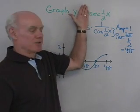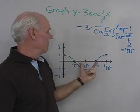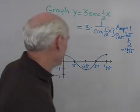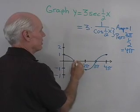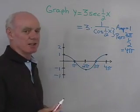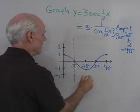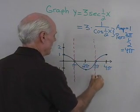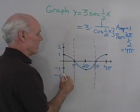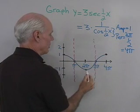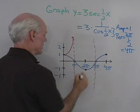Now let's see what the graph of sec(½x) looks like — that's going to be the reciprocal of this cosine graph. Every time the cosine is 0, the secant is undefined, so I'll draw asymptotes there. Every time the cosine is 1, the reciprocal is 1, and when the cosine is negative 1, its reciprocal is negative 1. Now I can draw that graph in.